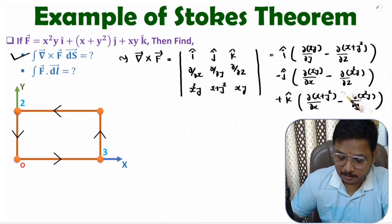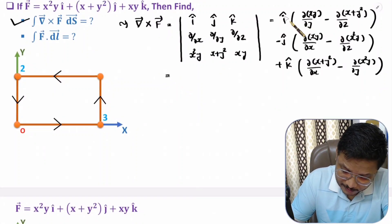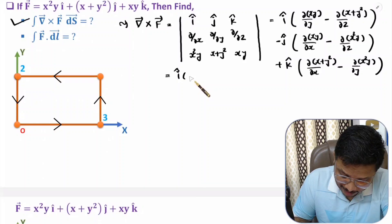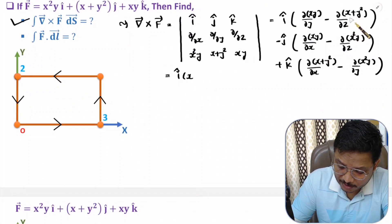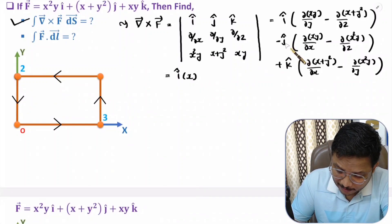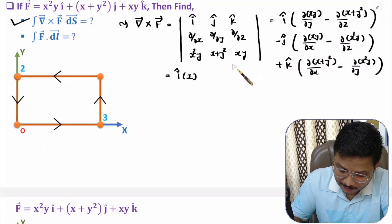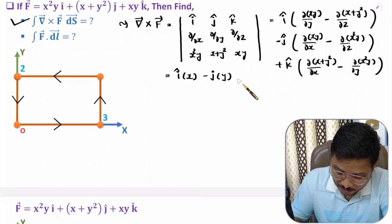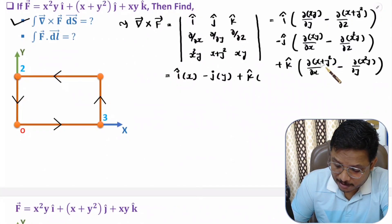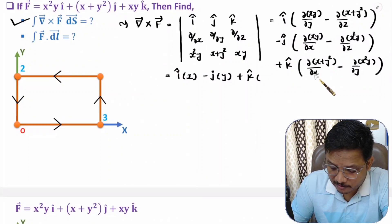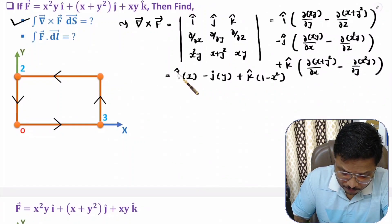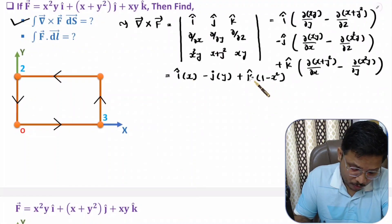Now solving each component: for the i-th coordinate, x is constant so del(xy)/dy = x, giving i·x. With respect to z we have nothing, so that partial differentiation is 0. For the j-th coordinate, del(xy)/dx = y, giving −j·y; with respect to z that is also 0. For the k-th coordinate, del(x+y²)/dx = 1, and del(x²y)/dy = x², giving k·(1 − x²). So del cross F = xi − yj + (1−x²)k.